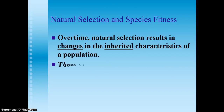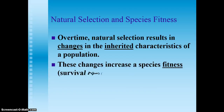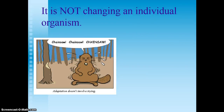So over time, natural selection results in changes in the inherited characteristics of a population. And these changes increase a species' fitness. That doesn't mean they're muscular or that they're the biggest. Fitness specifically refers to their survival rate, so these changes increase their rate of survival.